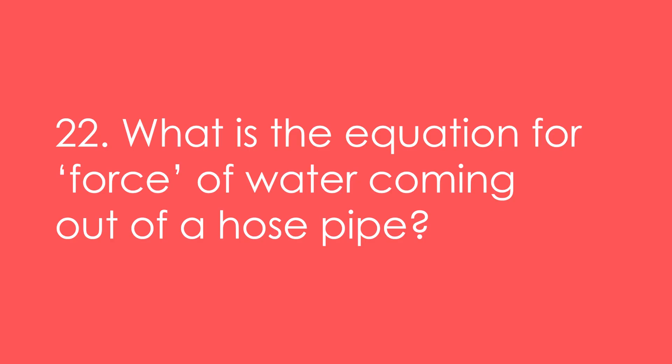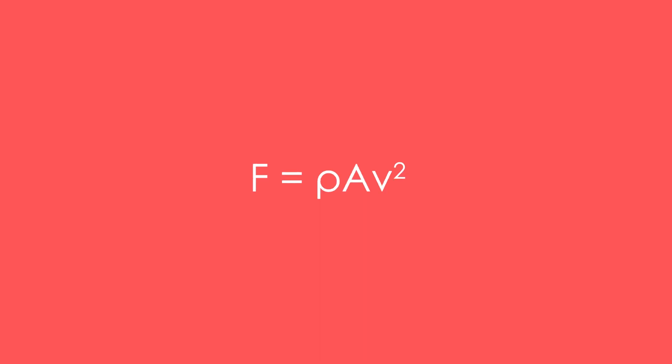22. What is the equation for the force of water coming out of a hose pipe? F equals rho A v squared. That's density times the cross sectional area of the hose times the speed of the water squared.